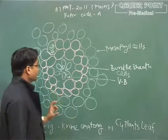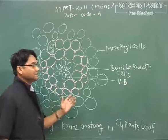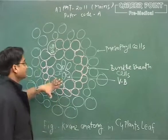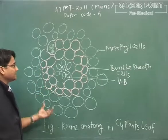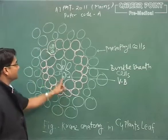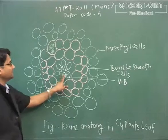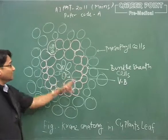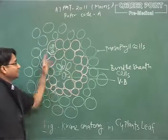If you know what is the Kranz anatomy, then you can easily solve this question. Kranz anatomy is the characteristic feature of C4 plants. The bundle sheath cells which are present just surrounding the vascular bundles look like a wreath, that is why it is called Kranz anatomy.